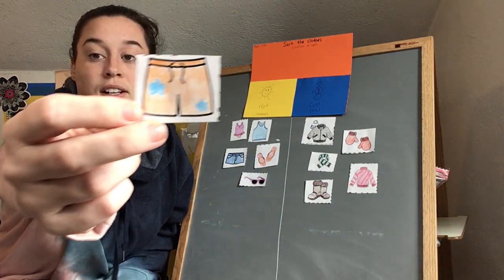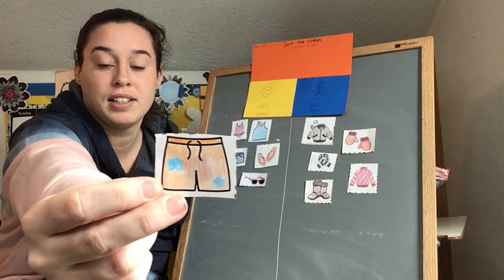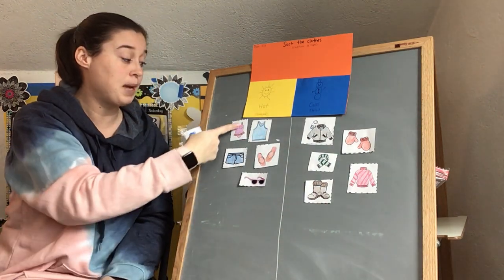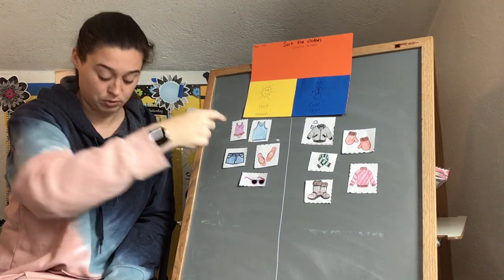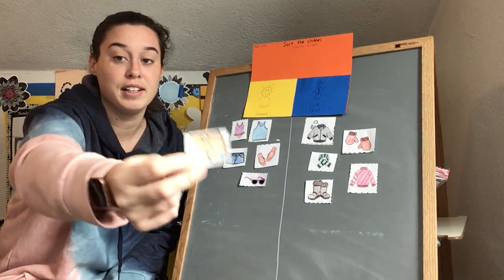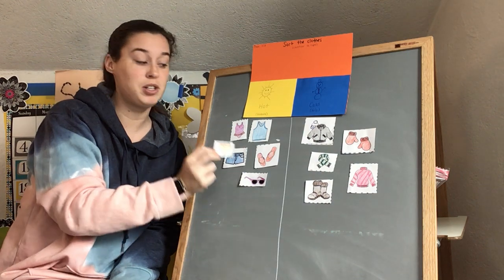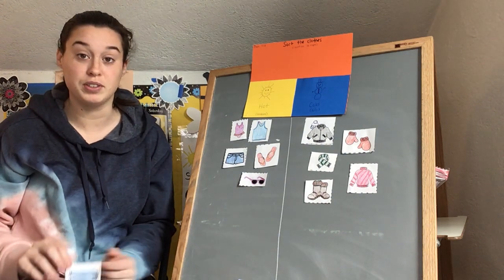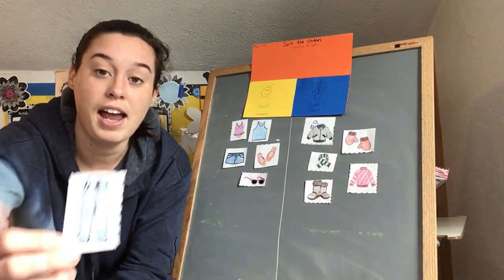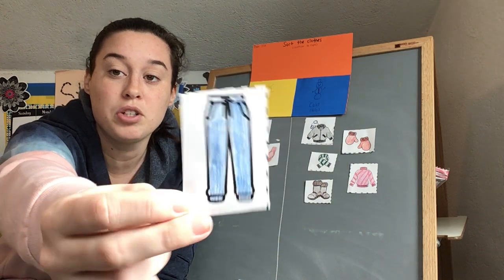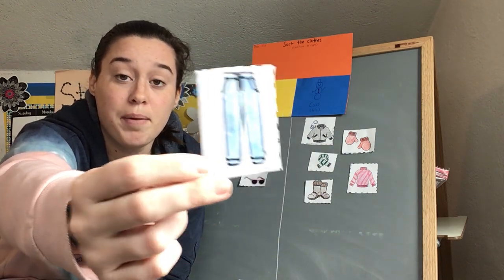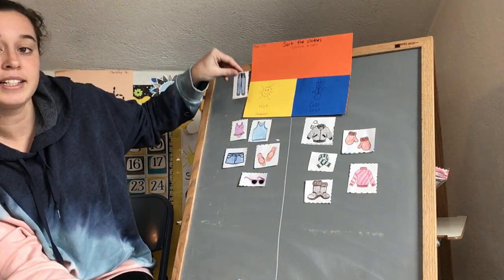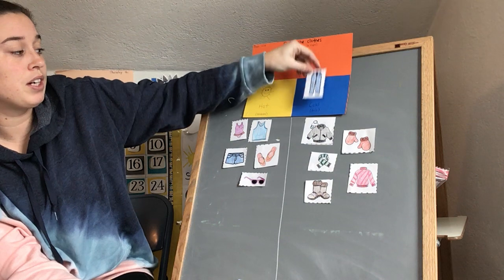And our shorts. Right? These also look like swim trunks. Right? So we already have a bathing suit up here. So you have to figure out if these are going to go with the other bathing suit or if it's going to go in the cold. So that's also going to go on the bottom for you to figure it out on your own. And our last piece of clothing is going to be sweatpants. Right? They're long pants. And your job is to figure out if these sweatpants are going to go in the hot or if they're going to go in the cold.